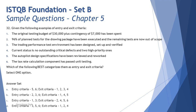Question number 32 is about entry and exit criteria. The question gives sample examples of different entry and exit criteria and asks you to filter and collate them — which ones are entry criteria and which are exit criteria. Try to solve each one without looking at the options first.